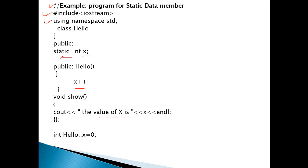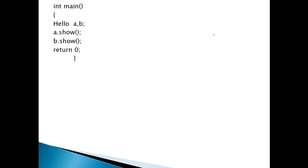The show function will display the message 'value of x' along with the value of x, followed by a new line. Then, using Hello followed by scope resolution operator (::) and x, we initialize x — that is, x's value becomes zero. We then create two objects of the Hello class: one named a and one named b.